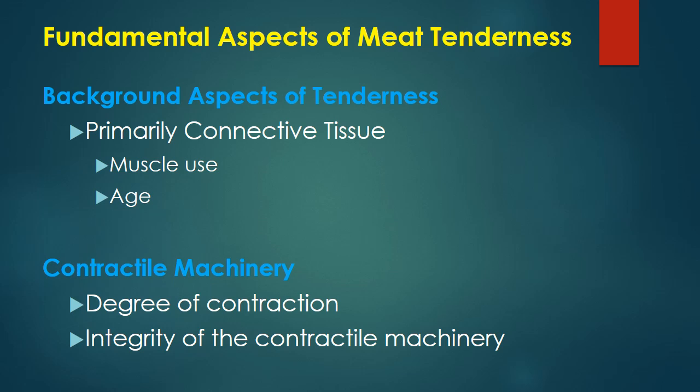Before discussing the effect of aging on tenderness in detail, we need to understand the fundamental aspects of tenderness. There are two categories: the background aspect of tenderness, and the contractile machinery. The background aspect is more important and is primarily determined by the connective tissue. The connective tissue wraps the muscle at different levels — epimysium, perimysium, and endomysium — and plays an important role in background tenderness. Muscles that are used more accumulate more connective tissue and become comparatively tougher. Age is also an important factor: more age means more connective tissue accumulation, and the collagen develops more cross-linkages, making it tougher.